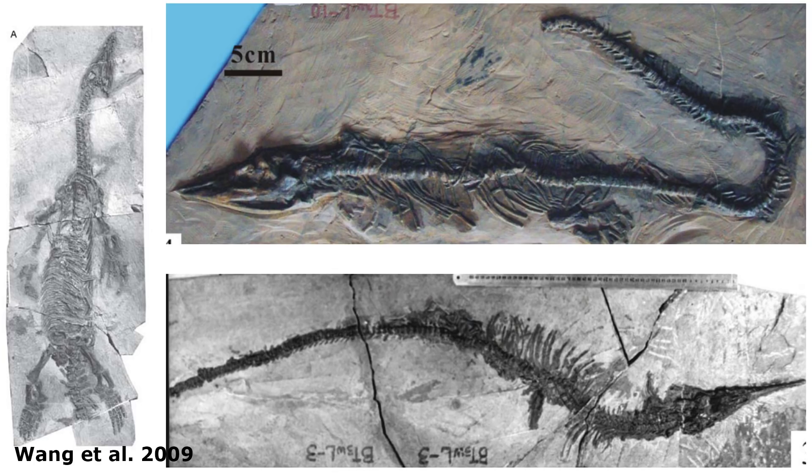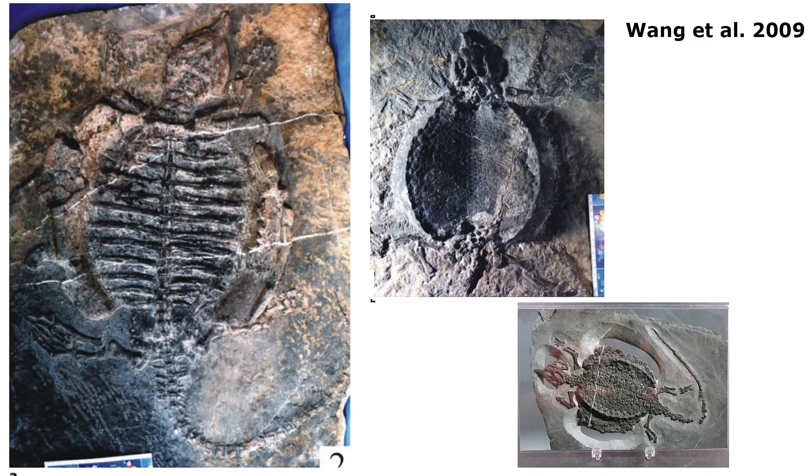The Guanling Group has preserved marine reptiles including ichthyosaurs, thalattosaurs, and placodonts, some of which closely resemble turtles. This late Triassic fauna of marine reptiles gives us a really unique window into the evolution of marine reptiles during the first third of the Mesozoic, around the same time the dinosaurs were originating on land.